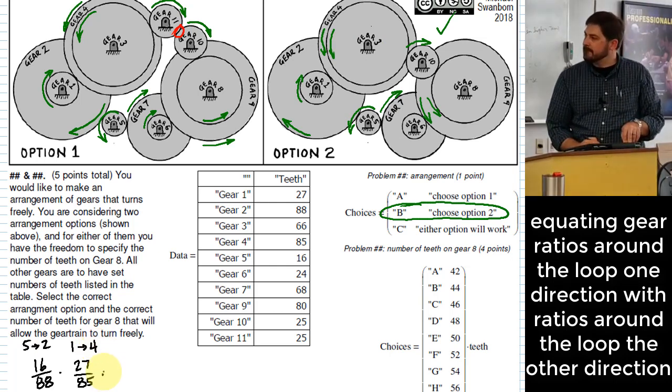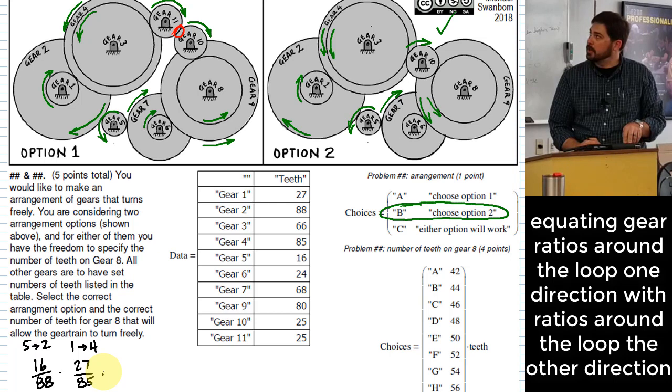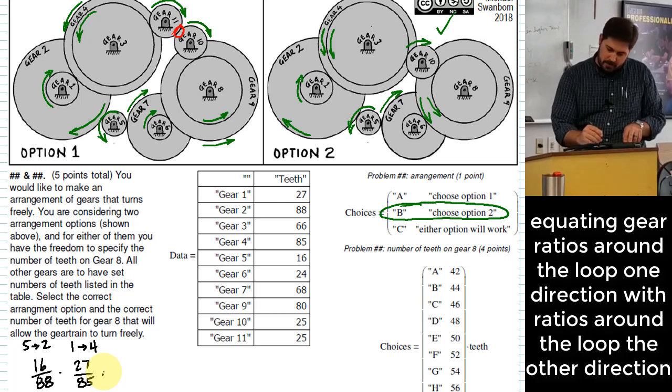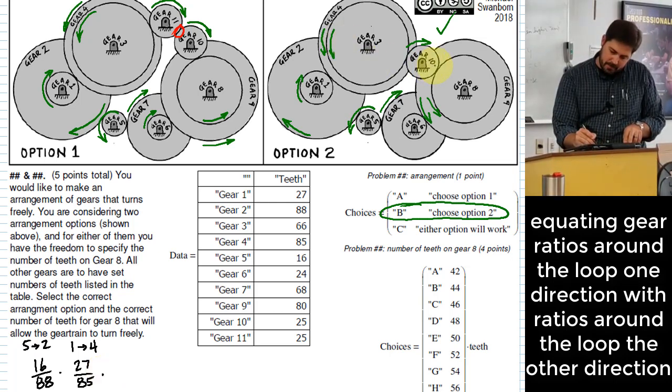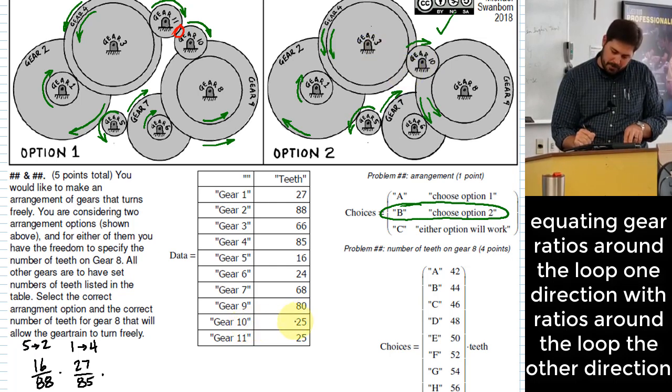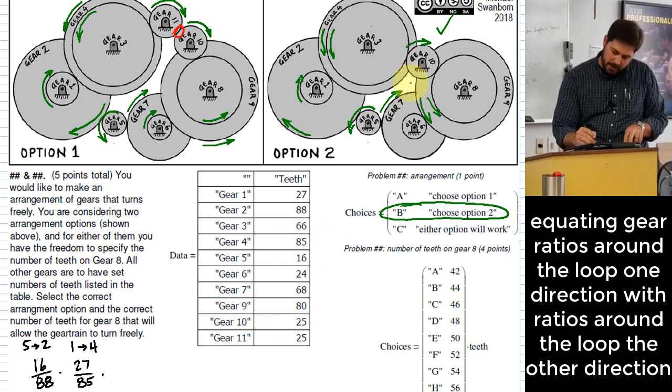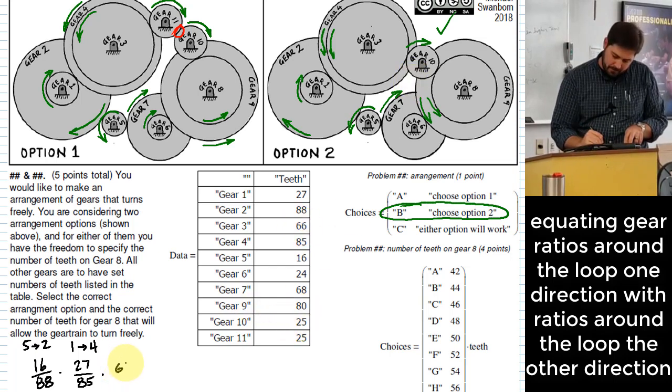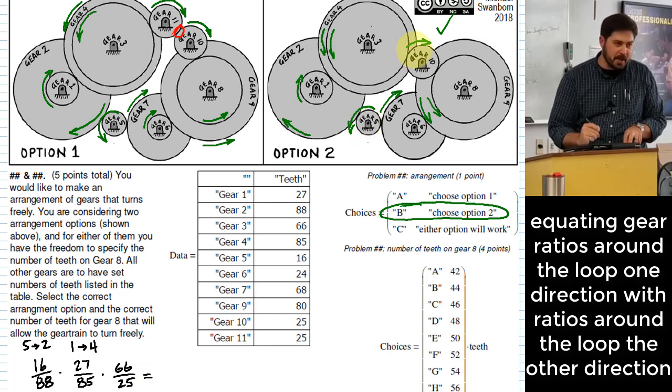Then what? The next one goes from three to 10, right? So does 10 go faster or slower than gear three? Should go faster because it's smaller, right? So I would multiply by 66 over 25. I'm saying this had better be equal to, now we'll trace around it the other way.